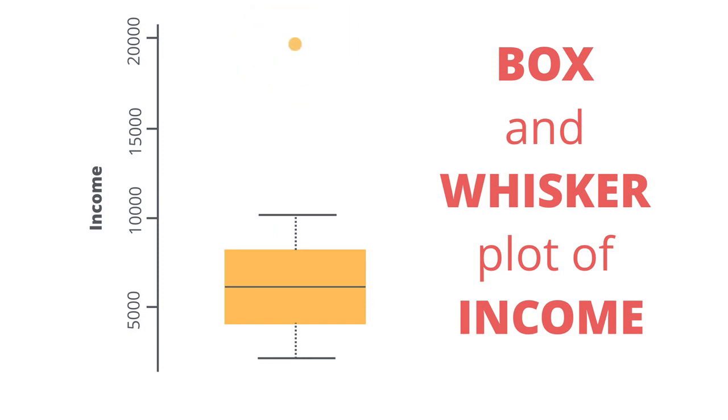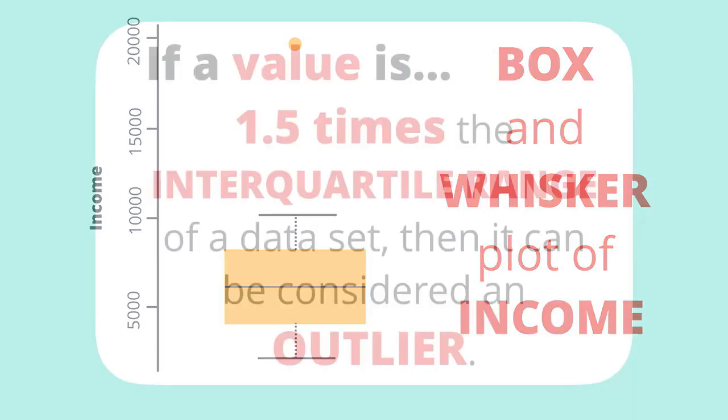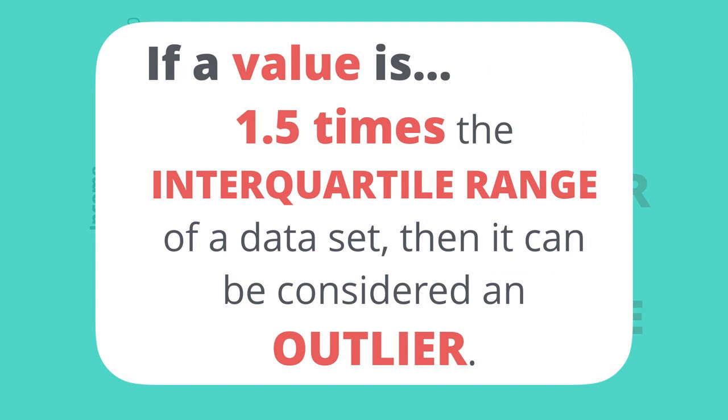With this visualization, we can make use of the general rule of thumb that says if a value is one and a half times the interquartile range of a data set, then it can be considered an outlier.